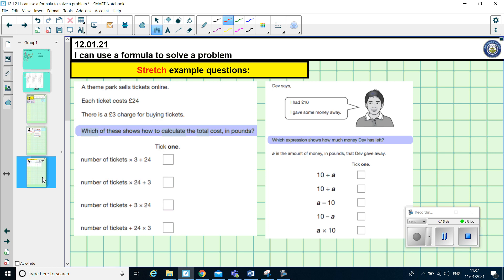So, a theme park sells tickets online. Each ticket costs £24, and there is a £3 charge for buying the tickets. So, we've got to look at these formulas and think about which one the best one is going to be. We look at them really carefully. I know it's going to be this one. The number of tickets times by 24. So, for example, if I wanted to buy four tickets for the people in my family, I would do number of tickets four times by 24. So, I've got to spend £24 on each ticket. Plus, I'm going to have to pay that £3 booking fee as well at the end. So, it has to be this formula.